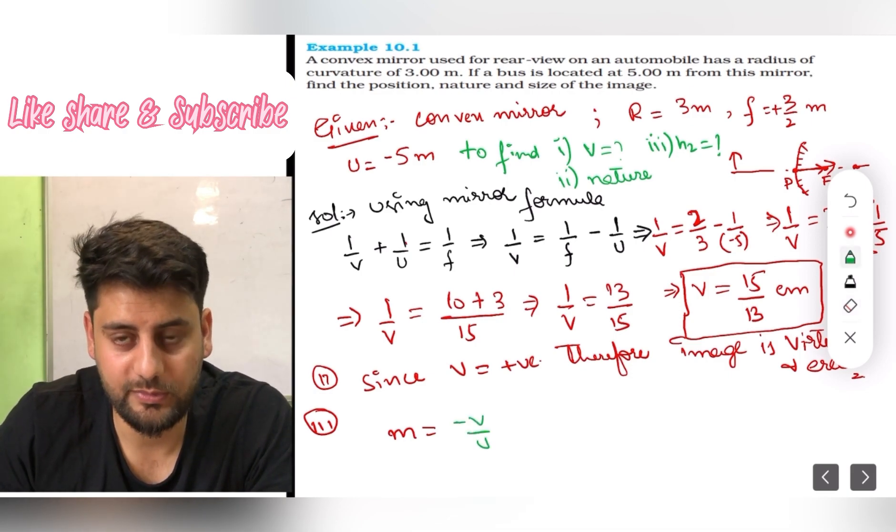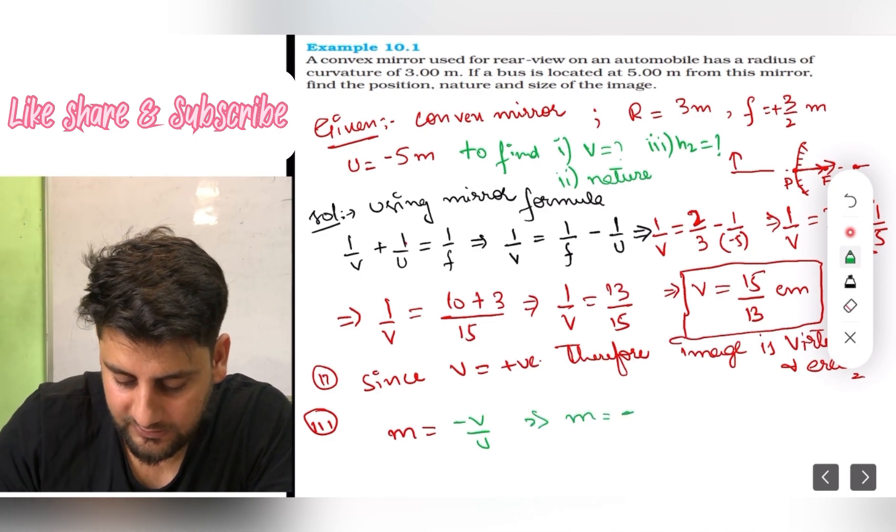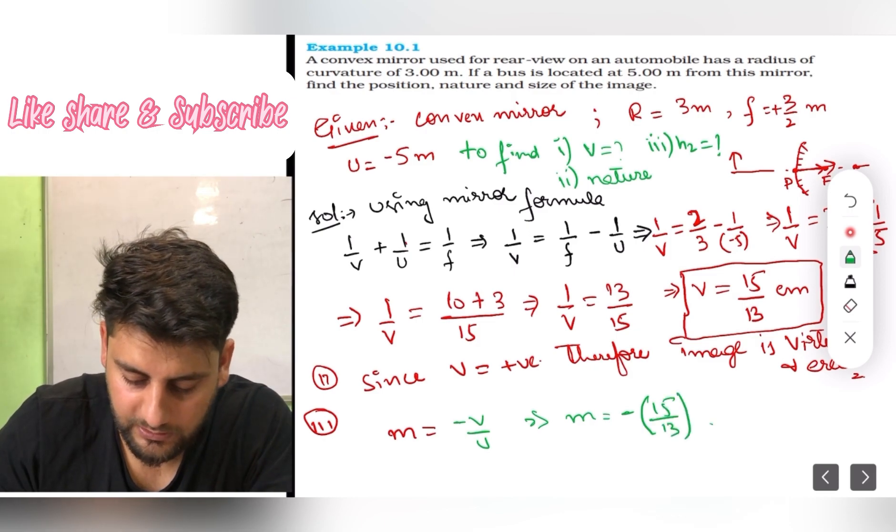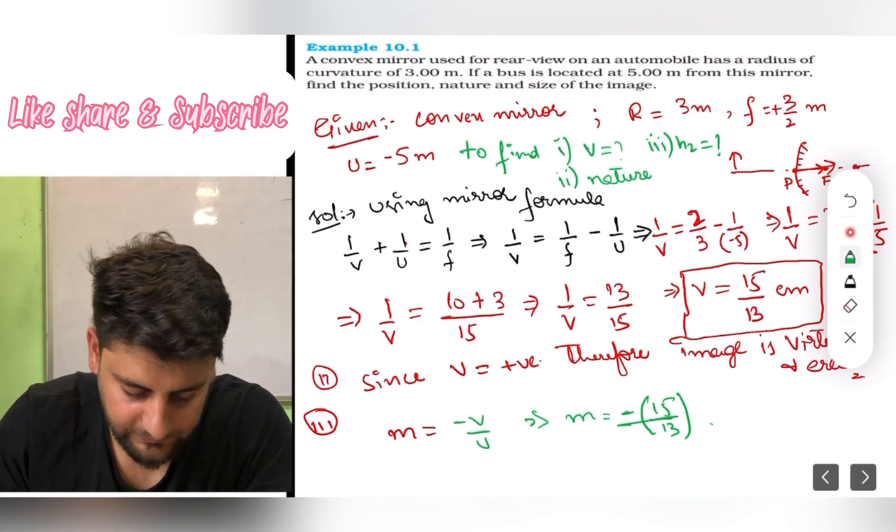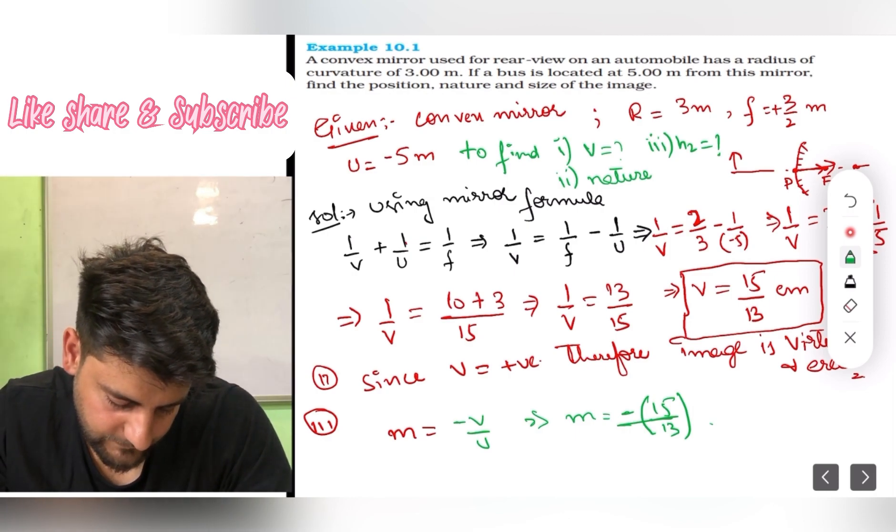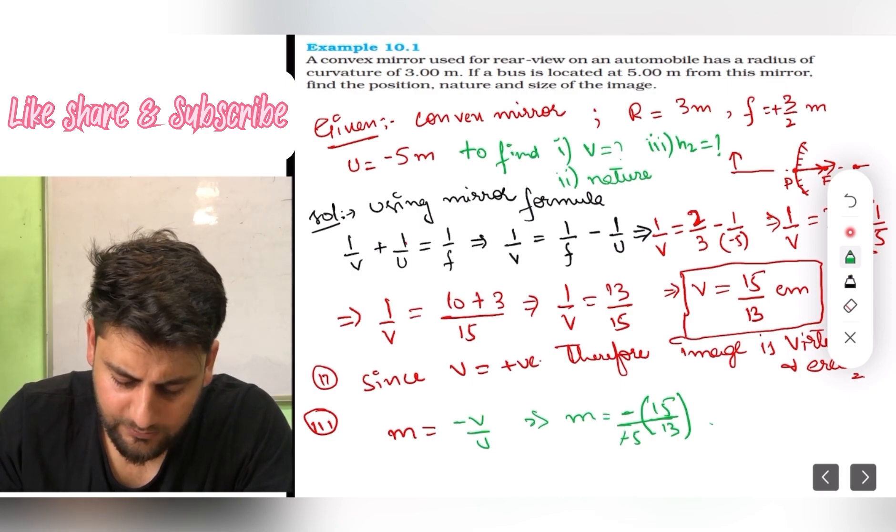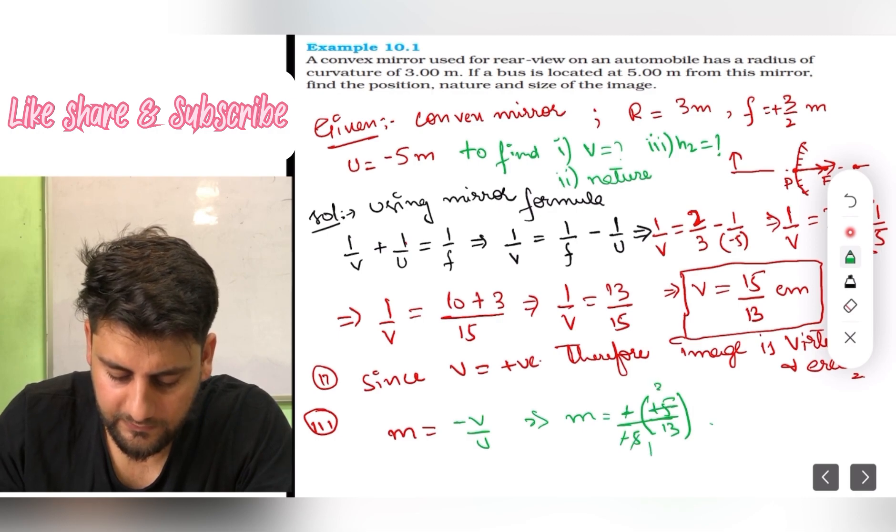Let's do that. We can first find m and then do further things. So m formula we have, m equals minus v upon u. I will write m equals minus, and v is 15 upon 13, and your u is minus 5. So you can see minus and minus is getting cancelled. 5 ones are 5 and 5 threes are 15. So m is approximately equal to 3 upon 13.